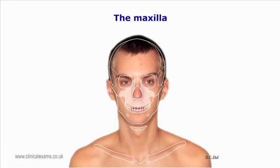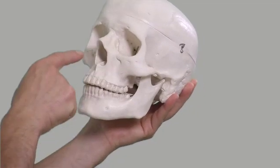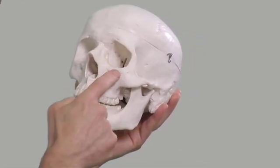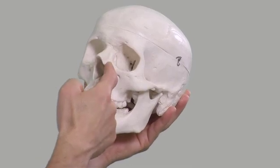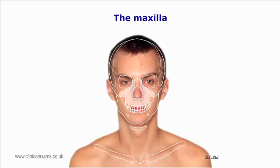The maxilla forms the upper part of the jaw. It articulates superficially with the frontal, zygomatic, nasal, and lacrimal bones. It also has deep articulations with the ethmoid, inferior nasal concha, palatine, vomer, and the adjacent fused maxillary bones.